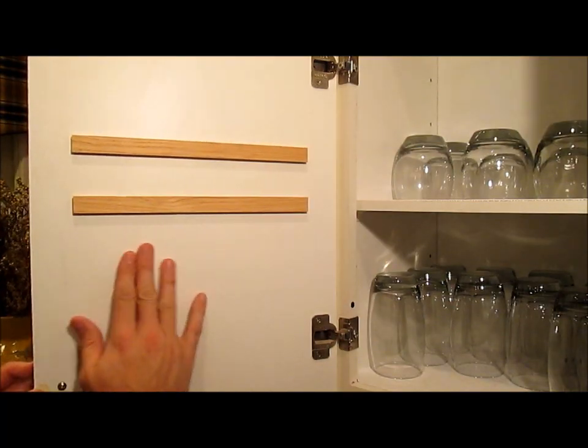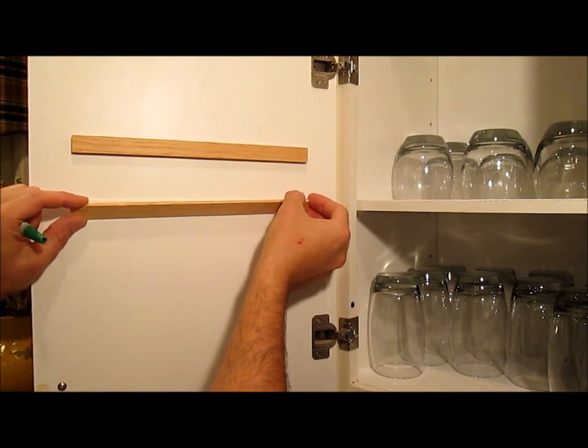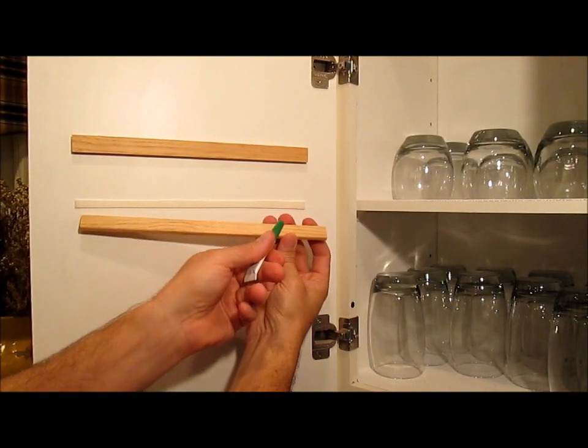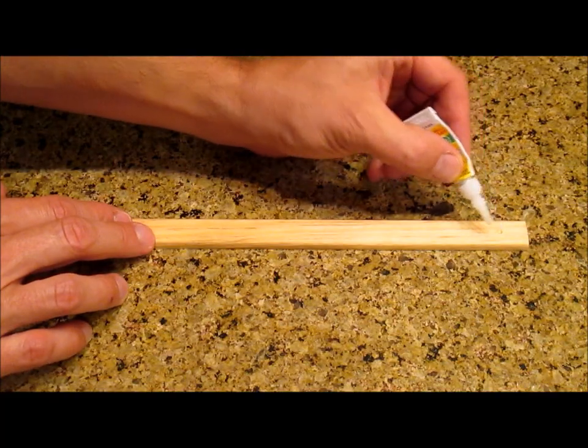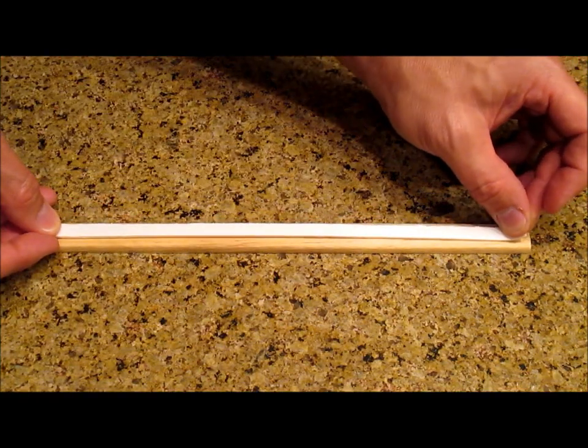Most tape will stick really well to the inside of cabinets. But if yours doesn't stick very well to your wood, put a couple of drops of super glue along here and stick it back on like this, and then stick the tape on top of that.